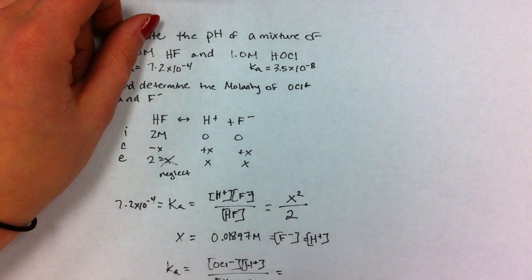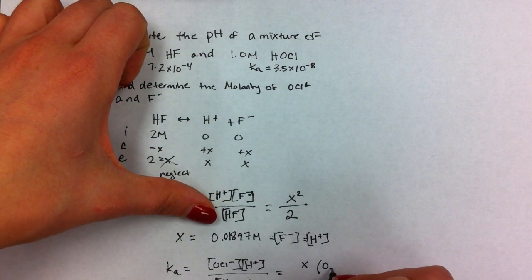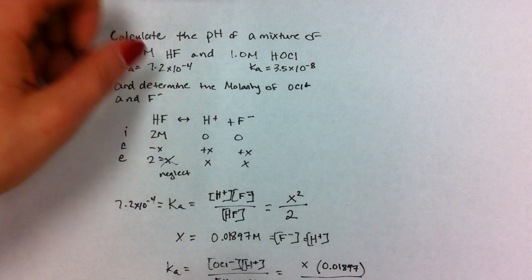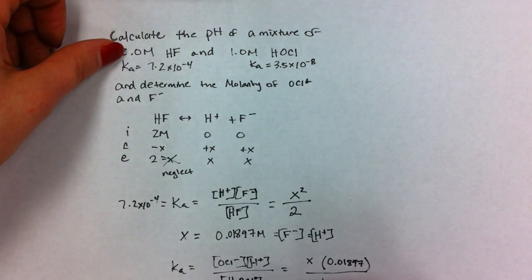We can substitute. We don't know OCl-. We know the H+ in solution is 0.01897, and we know HOCl given in the problem was one molar.